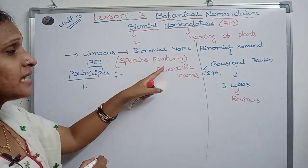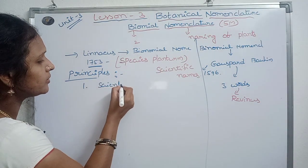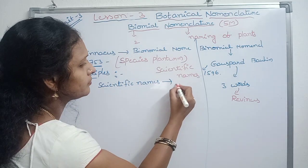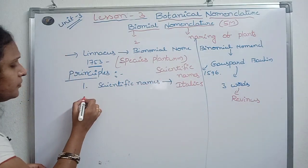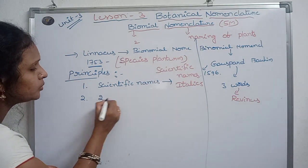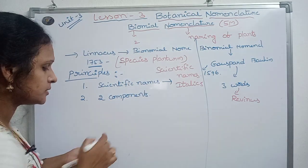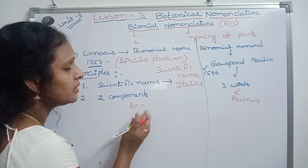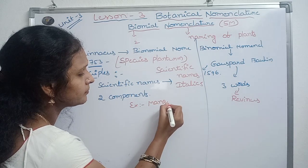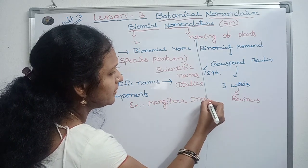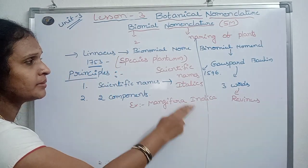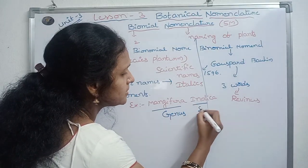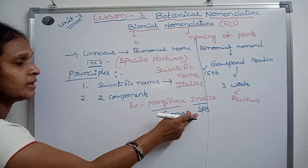Scientific names are written in italics. Scientific names have two components. The first word is the genus, and the second word is indicated to species.